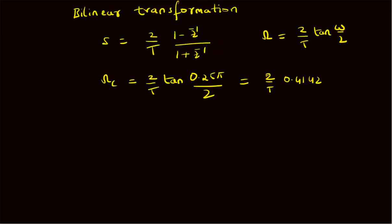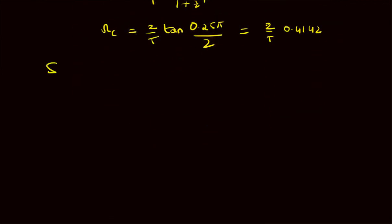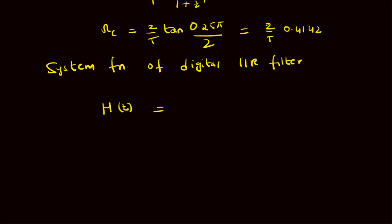Using the transformation s = (2/T)(1 − z⁻¹)/(1 + z⁻¹) in the given system function, we can write the system function in the digital domain. The system function of the digital IIR filter H(z) equals: ωc = (2/T) × 0.4142 divided by [(2/T)(1 − z⁻¹)/(1 + z⁻¹) + (2/T) × 0.4142].